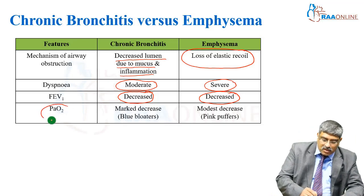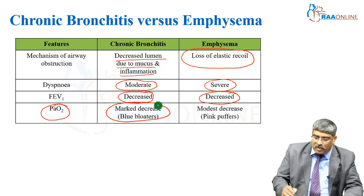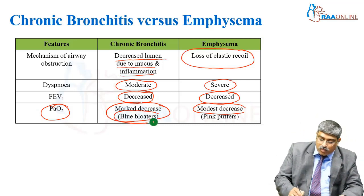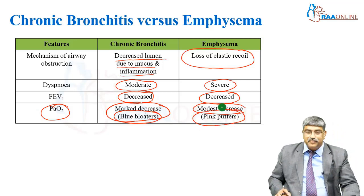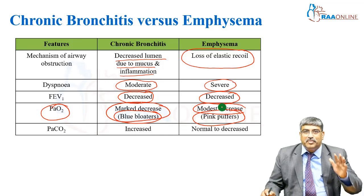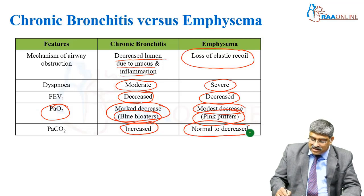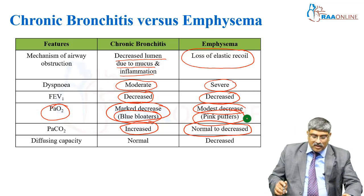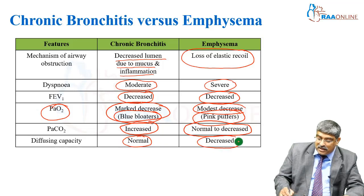PaO2 oxygenation is markedly decreased in chronic bronchitis and only modestly decreased in emphysema. So chronic bronchitis patients are always called blue bloaters and emphysema patients are called pink puffers. PaCO2 is increased in chronic bronchitis, but because the emphysema patient is dyspneic and hyperventilating, PCO2 is going to be low. Diffusing capacity is normal in chronic bronchitis but is affected in emphysema.